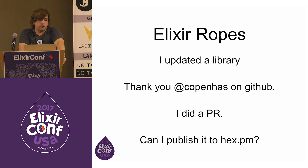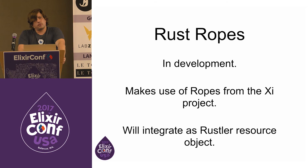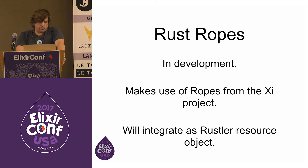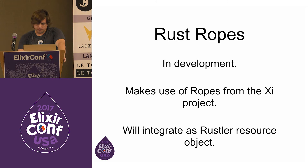I did a pull request to the original repo today — if they'd like to push it to Hex, I'd appreciate that; if not, I'm happy to take it over. There are also Rust ropes: there's an editor project on GitHub called Xi, building an editor completely in Rust. The idea is to use Rustler resource object features to tie that rope into my project. I haven't gotten that far — that was some of the ambition I didn't quite reach.